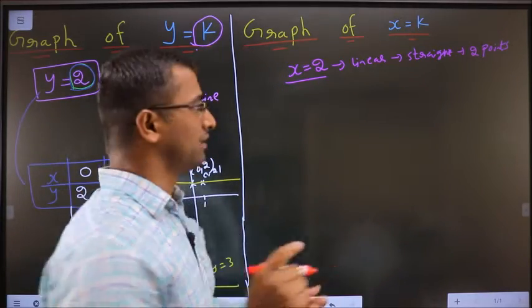Let's say I want to graph for x equal to 2. It is also a linear equation. For every linear equation, we get a straight line. To draw the straight line, we need two points. To get the two points, I need that table.